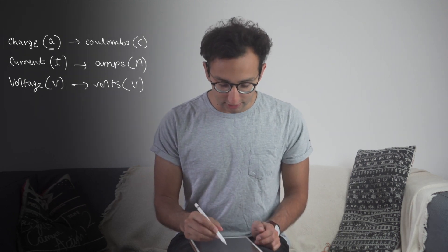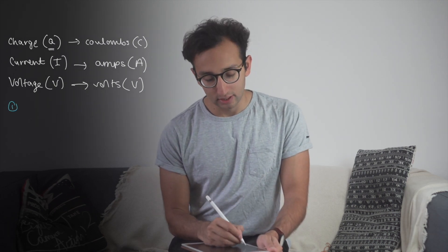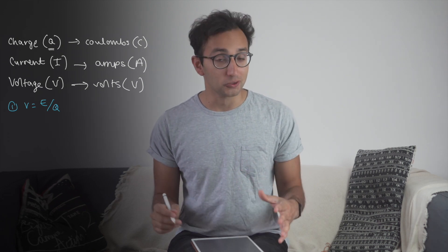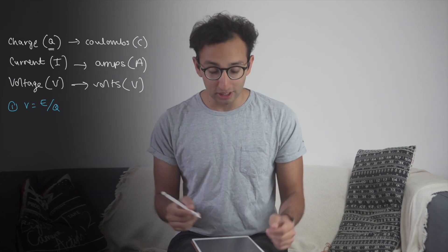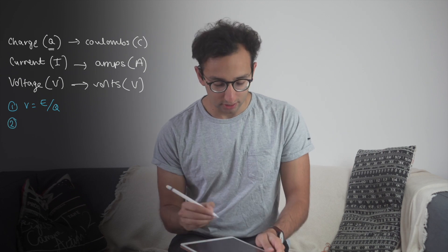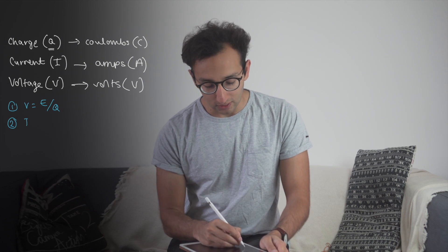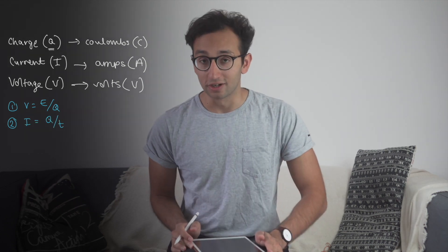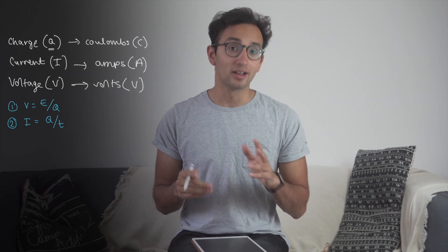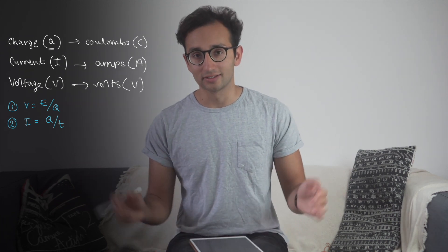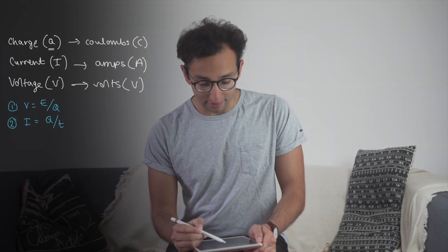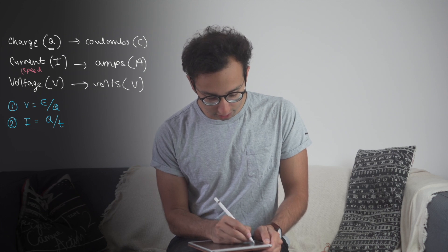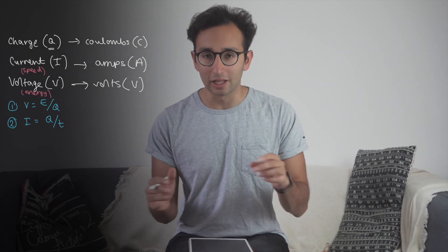Now let's go over the formulae. Formula one is V = E/Q — voltage equals energy divided by charge. Energy is measured in joules, charge in coulombs. Formula two: since current is the rate of flow of charge, I = Q/T — current equals charge over time. Time is lowercase t, measured in seconds. If you see time in minutes in an exam question, multiply by 60 to convert to seconds. A key conceptual anchor: current is a measure of speed, and voltage is a measure of energy.